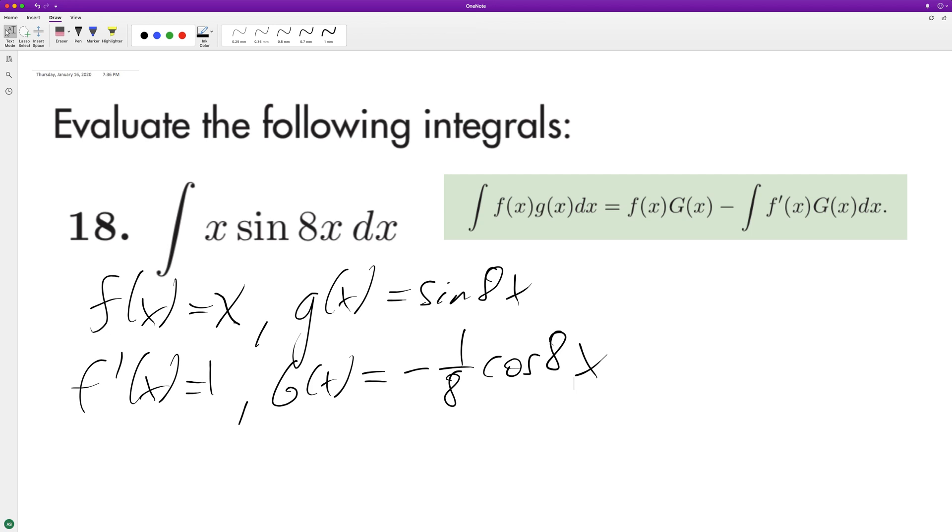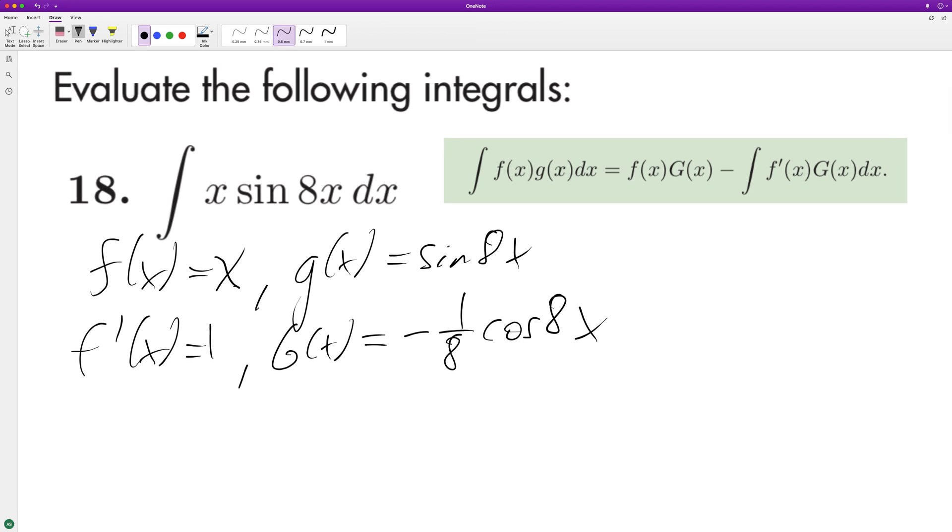So plug and play time: f of x, which is x, times negative one-eighth cosine of 8x, minus the integral of f prime of x, which is 1, and then G of x, negative one-eighth cosine of 8x dx.